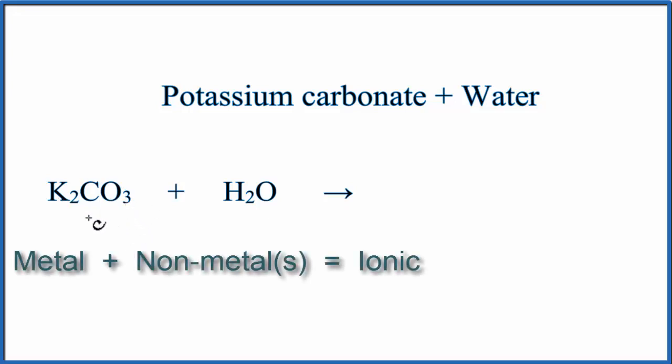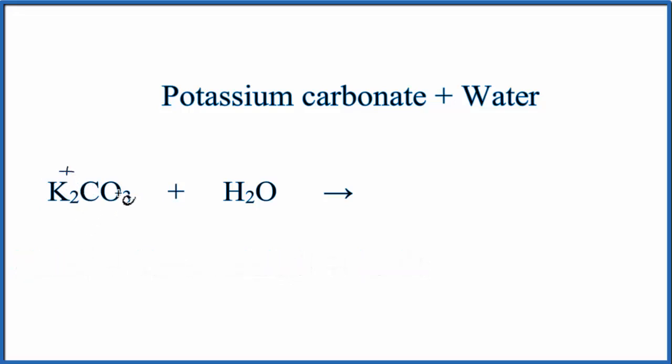With an ionic compound, we'll look up K on the periodic table. It's in group 1, so it has a plus 1 charge. And then the CO3, that's called a polyatomic ion, it's the carbonate ion. So we'll look that up on a table of polyatomic ions, and we see that that has a 2 minus charge.